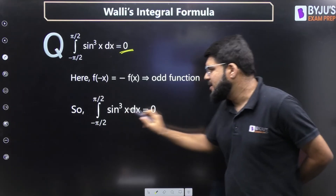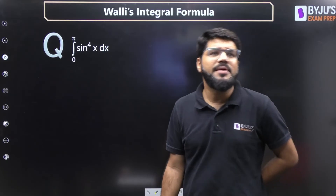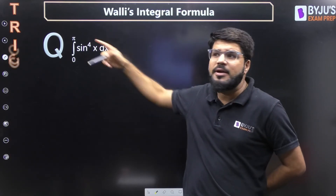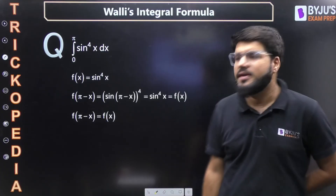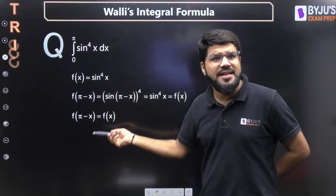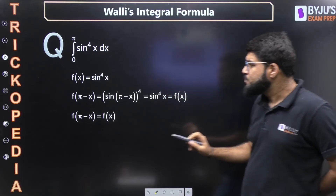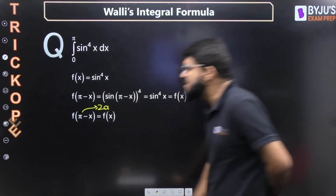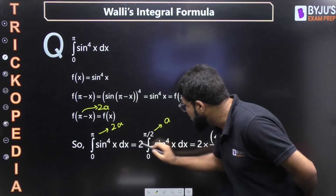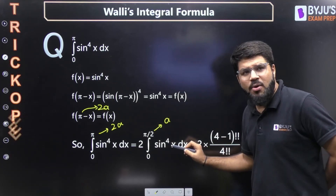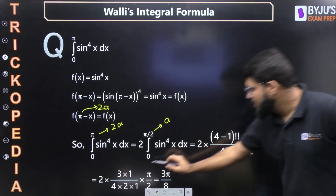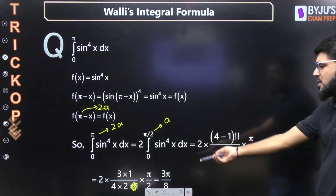If the limit is 0 to π, you still cannot apply Walli's directly. Consider the integral of sin⁴(x) from 0 to π. Let f(x) = sin⁴(x). Then f(π − x) = sin⁴(π − x) = sin⁴(x) = f(x). Since f(2a − x) = f(x), the property gives: integral from 0 to 2a equals twice integral from 0 to a. So it becomes 2 times the integral from 0 to π/2 of sin⁴(x) dx. Applying Walli's: 2 × (3!! / 4!!) × π/2, giving the final answer.